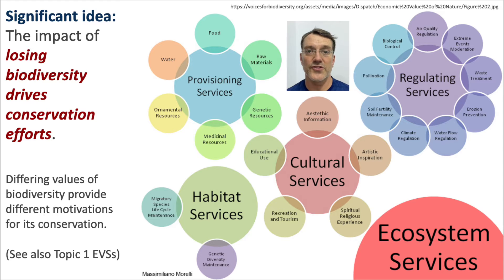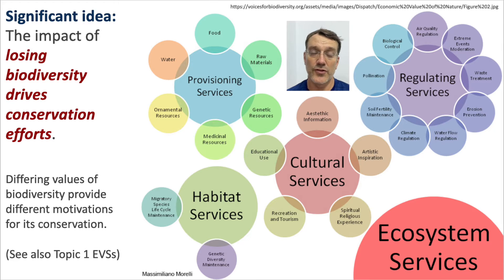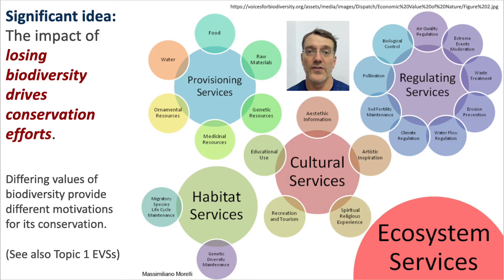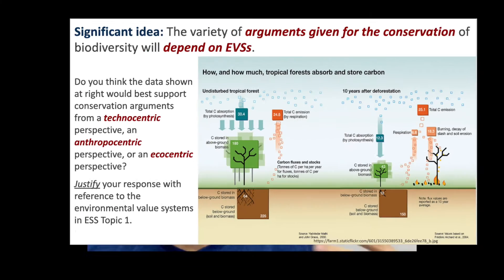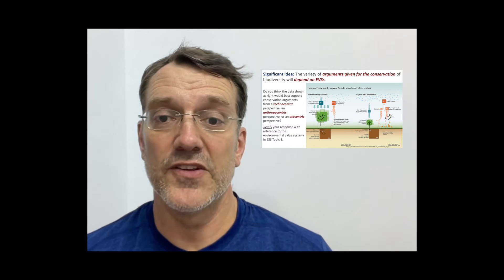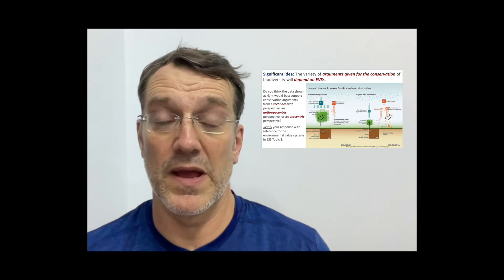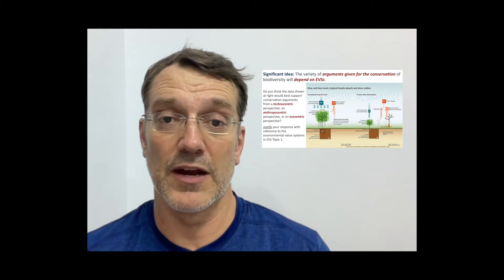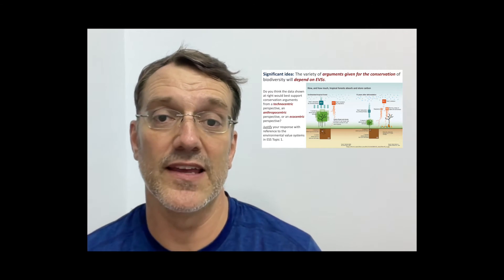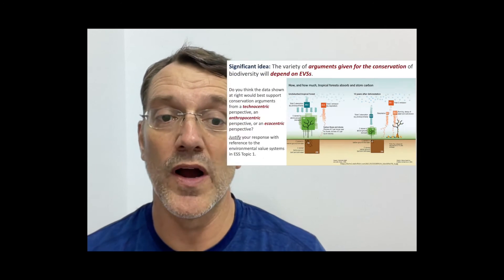The first significant idea here is that the loss of biodiversity is what's driving efforts to conserve it, and those efforts to conserve biodiversity are greatly influenced by one's environmental value system. The variety of arguments given for the conservation of biodiversity depends on those environmental value systems discussed back in Topic 1.